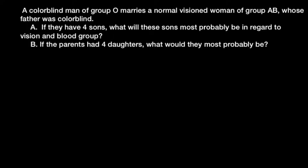Hello and welcome to Nikolai's genetics lessons. This video is going to be about the ABO blood group system and an X-linked trait, that is colorblindness. Here is a problem: a colorblind man of blood group O marries a normal-visioned woman of blood group AB whose father was colorblind.